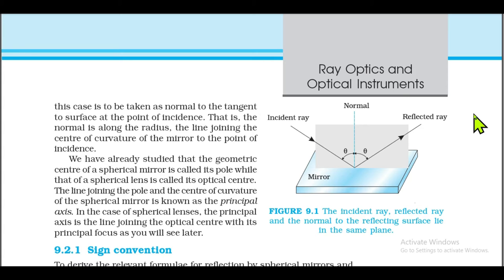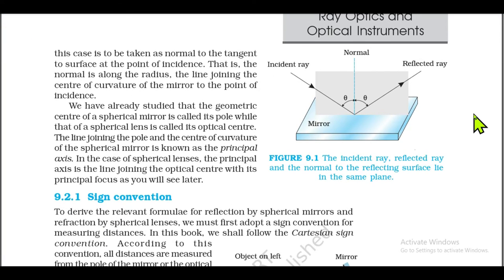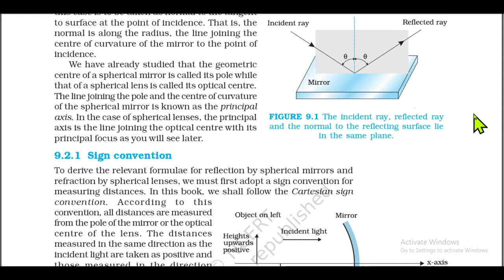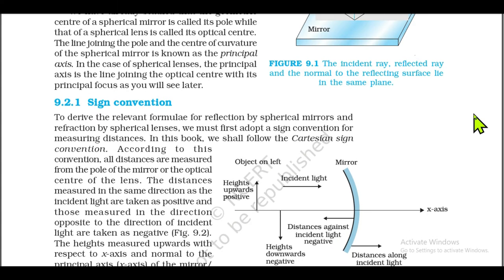The geometric center of a spherical mirror is called its pole, while that of a spherical lens is called its optical center. The line joining the pole and the center of curvature of the spherical mirror is known as the principal axis. In the case of spherical lenses, the principal axis is the line joining the optical center with its principal focus. 9.2.1 Sign Convention: To derive the relevant formulae for reflection by spherical mirrors and refraction by spherical lenses, we must first adopt a sign convention for measuring distances.